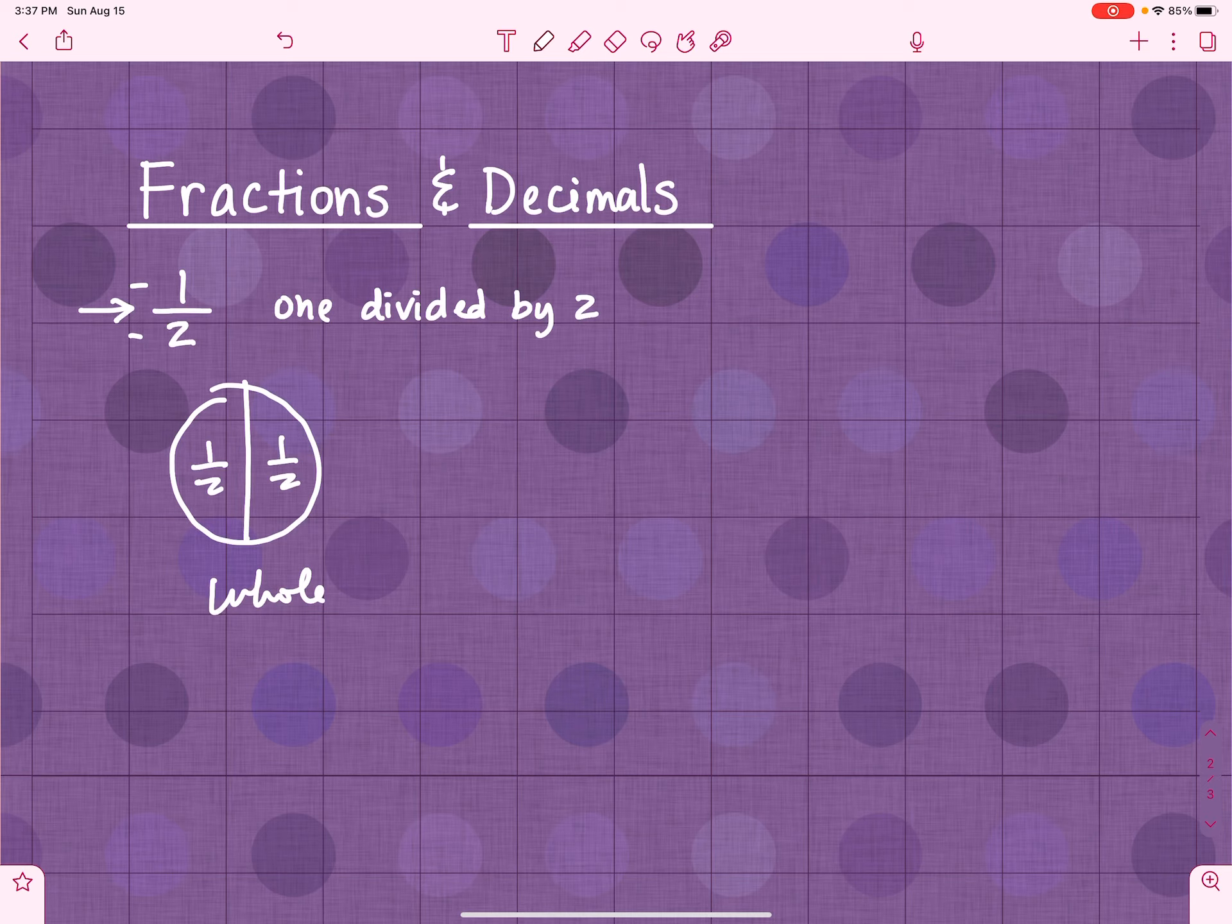Okay, so another way to think about this fraction. Every fraction can be written as a decimal. So one half. How would I write that as a decimal? Well, it's a pretty basic one, so we all know that it's 0.5. But mathematically, let me show you what that looks like. It hinges off this idea of division. So that means one divided by two.